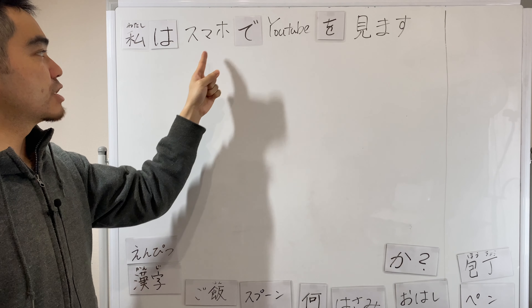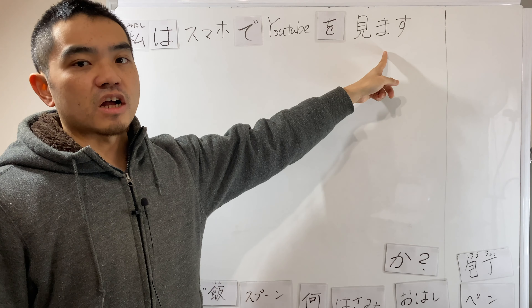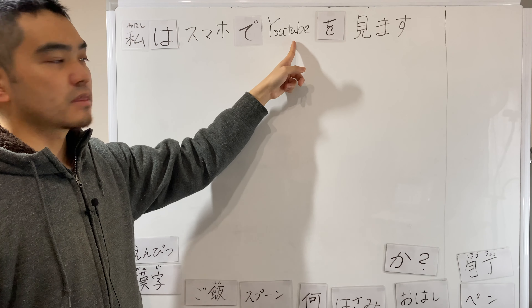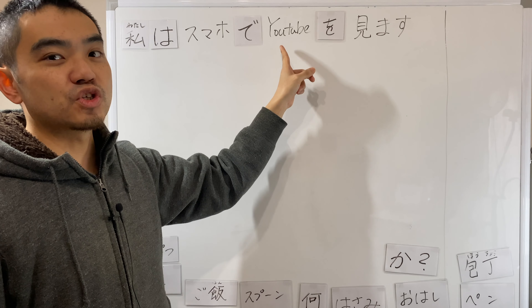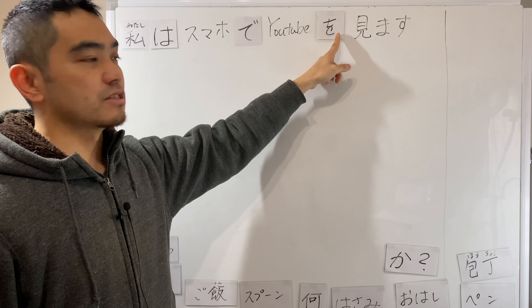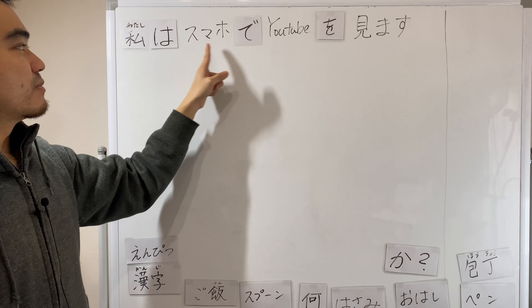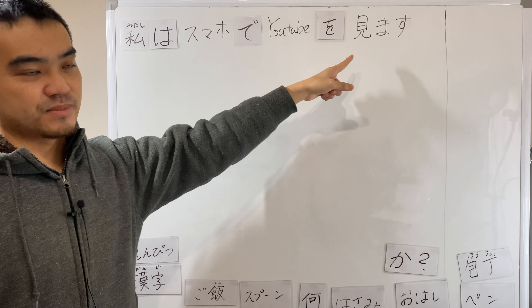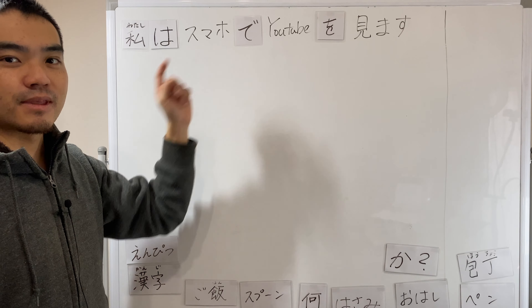スマホ。わたしはスマホでYouTubeを見ます — to watch or to see. What do you see? YouTube, right? YouTubeを見ます。What do you see? YouTubeを。スマホで — what do you use to watch? スマホで。